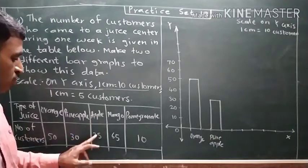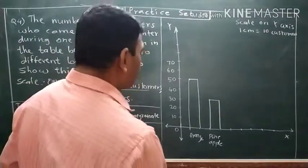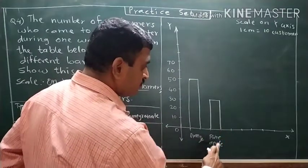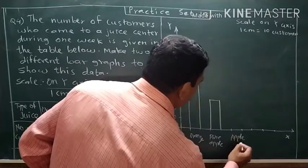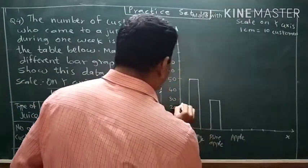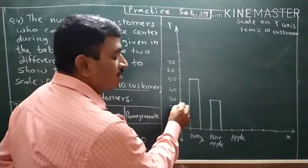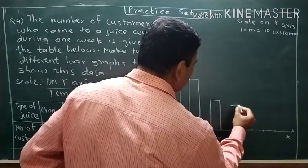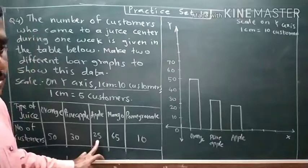For apple juice, twenty-five customers are coming within a week to a juice center. We are giving one centimeter distance after the previous bar. For apple, we have to show twenty-five. After twenty, there are five more — that is called twenty-five. So we will mark it first, where twenty-five is coming, and draw the bar.